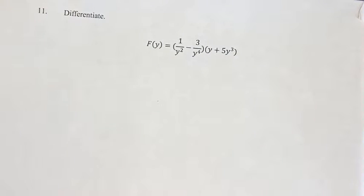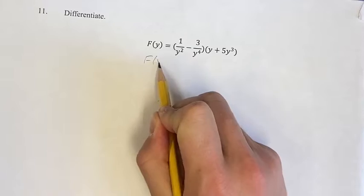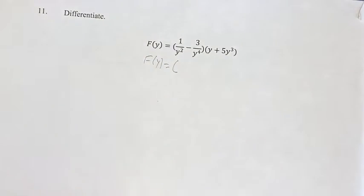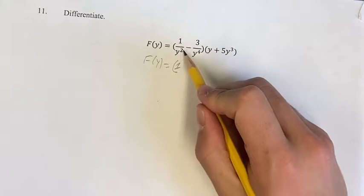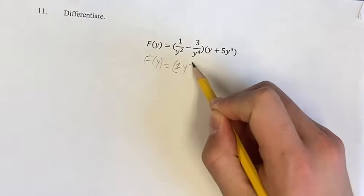Before we do anything, I think it'll be easier to differentiate this if we create all the exponents into the numerator. So if you have an exponent in the denominator, you want to bring it into the numerator. You want to bring it up, you want to multiply the exponent by negative 1.